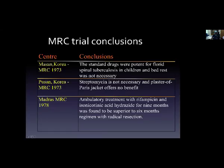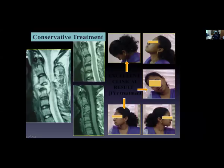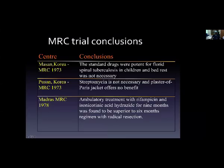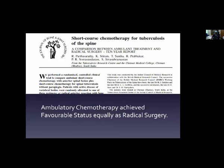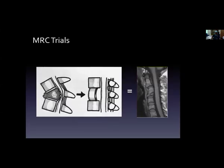The MRC trials done in Madras in 1978 and Busan in Korea in 1973 all showed that ambulatory treatment with rifampicin and isoniazid for nine months was superior to six-month regimes with radical resection and without any of the complications of surgical treatment. The shortcourse chemotherapy for tuberculosis of the spine, reported at 10-year follow-up from Madras, conclusively proved that ambulatory chemotherapy achieved favorable status equally as radical surgery.